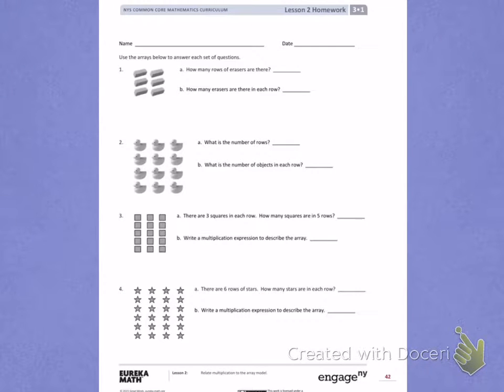This is Module 1, Lesson 2. Today's objective was to relate multiplication to the array model. Use the arrays below to answer each set of questions.